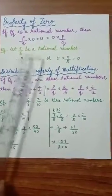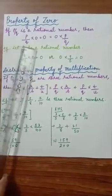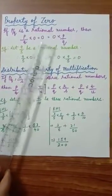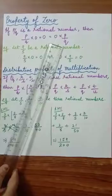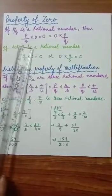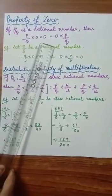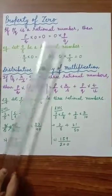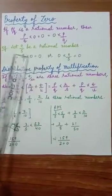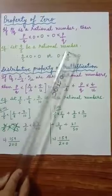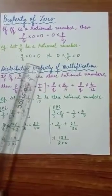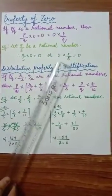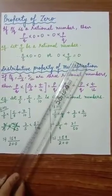Now, property of 0. If p by q is a rational number, then p by q into 0 equals 0, or 0 multiplied by p by q also equals 0. Any rational number multiplied with 0 gives 0. For example, let 9 by 5 be a rational number. So 9 by 5 into 0 equals 0, or 0 multiplied by 9 by 5 equals 0.